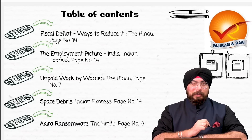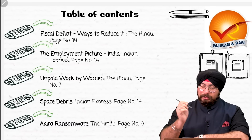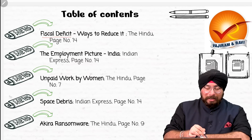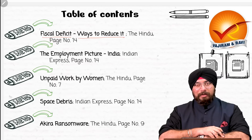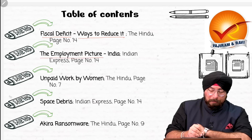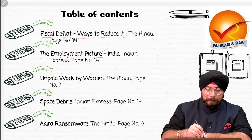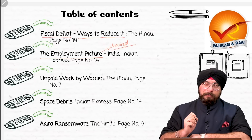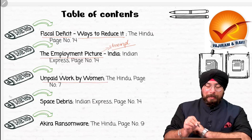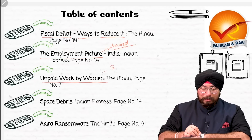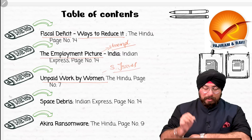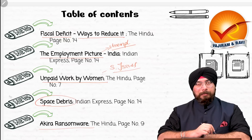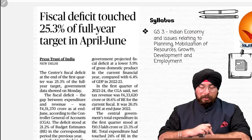Let us see the table of contents and the topics which we are going to discuss today. The first very important topic is fiscal deficit and the various ways to reduce it in our country. Second is the employment picture and the big issue of unemployment. Third is unpaid work by women, pertaining to social issues. Fourth is space debris. Fifth is the Akira ransomware. Let us start with the first topic.